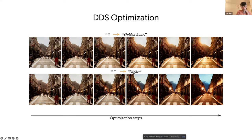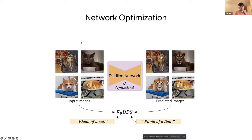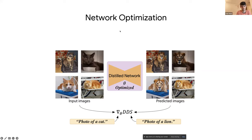We can also use this score function to train an image-to-image network that performs this translation directly without optimization. The advantage of this approach is that during inference time the network is much faster — we can do specific editing in one feed-forward step without needing to do optimization over the image.